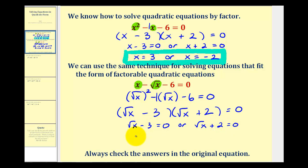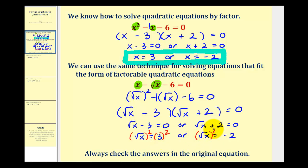Adding three to both sides gives the square root of x equals three, and the other equation gives the square root of x equals negative two. Squaring both sides of each equation, it appears we have two solutions: x equals nine or x equals four. But one important thing to remember is when applying this technique to non-quadratics, we always need to check these values back into the original equation, because sometimes they'll be what's called an extraneous solution.